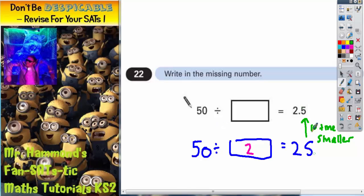So if our answer needs to be 10 times smaller, we're going to have to divide it by something that is 10 times bigger. And 10 times bigger than this 2 would be 20.